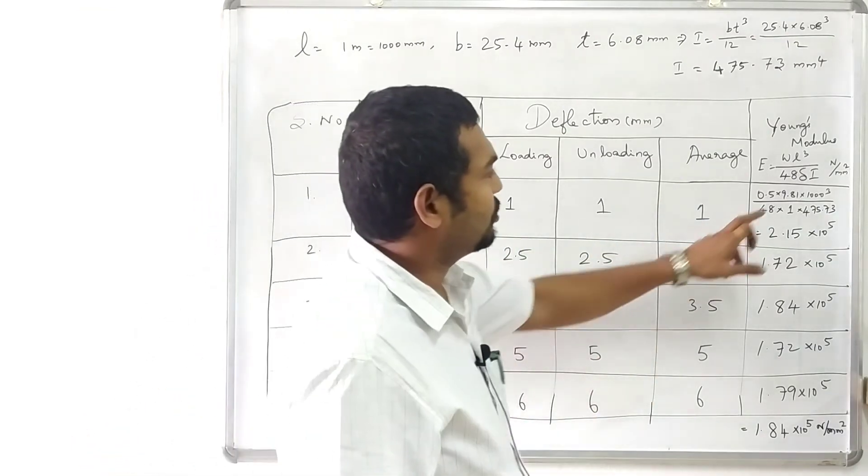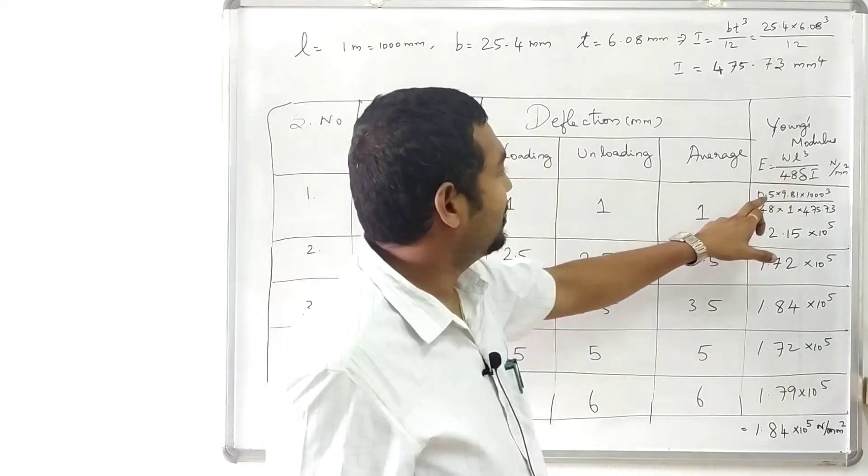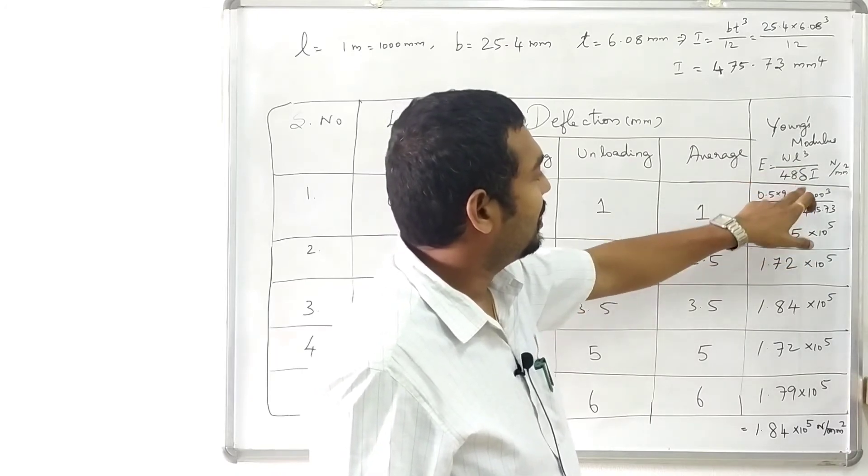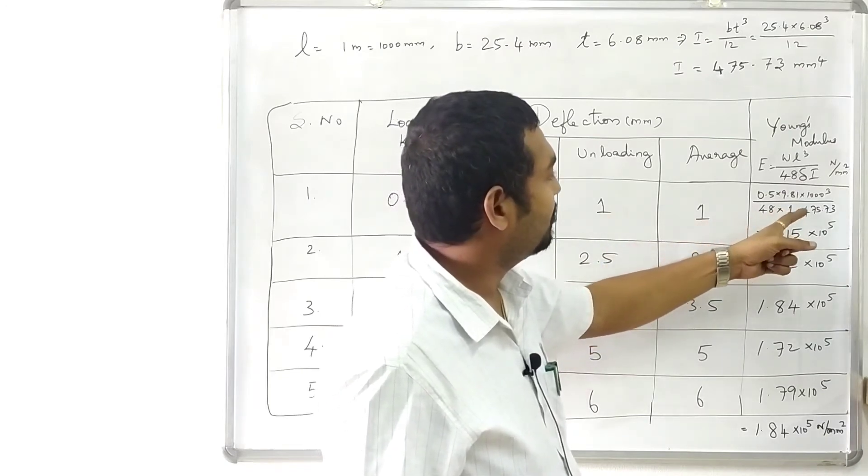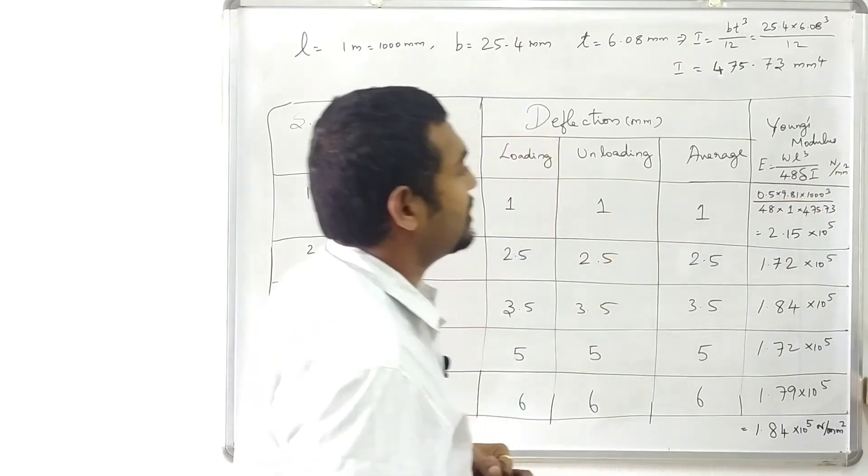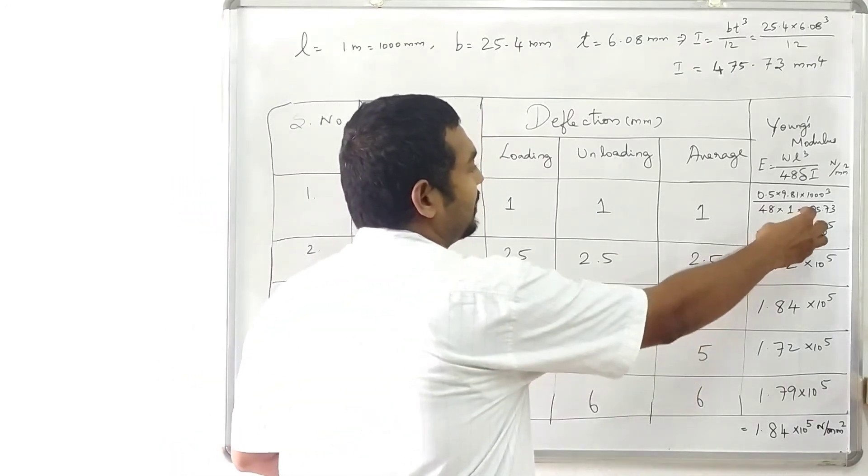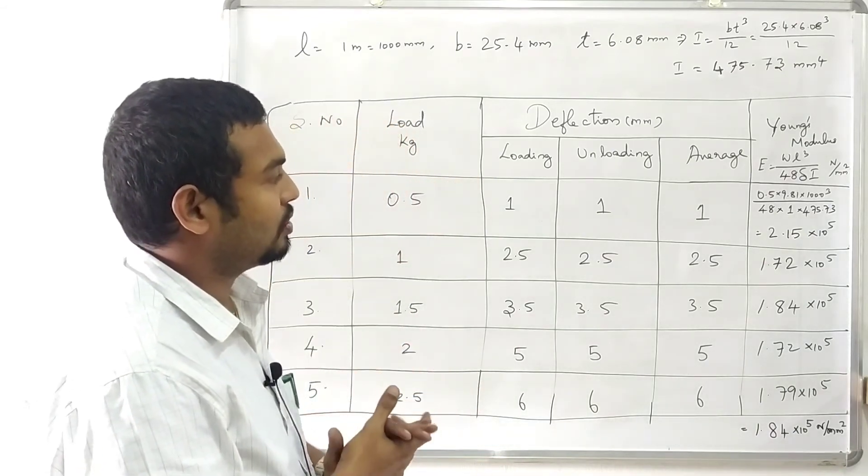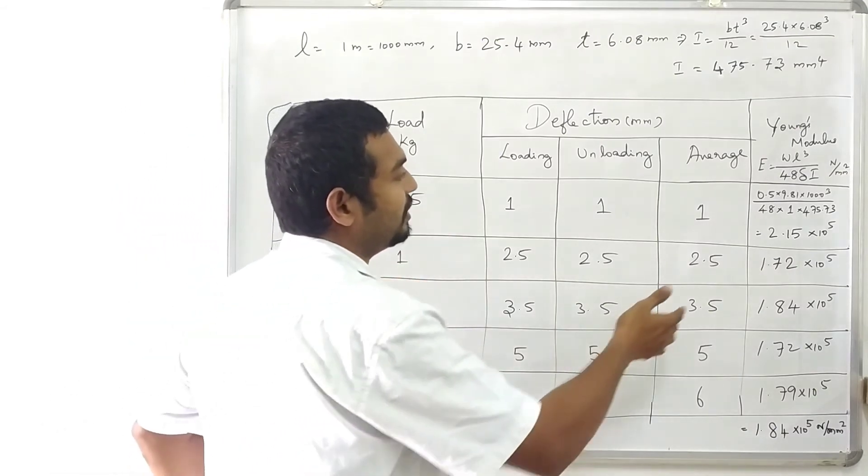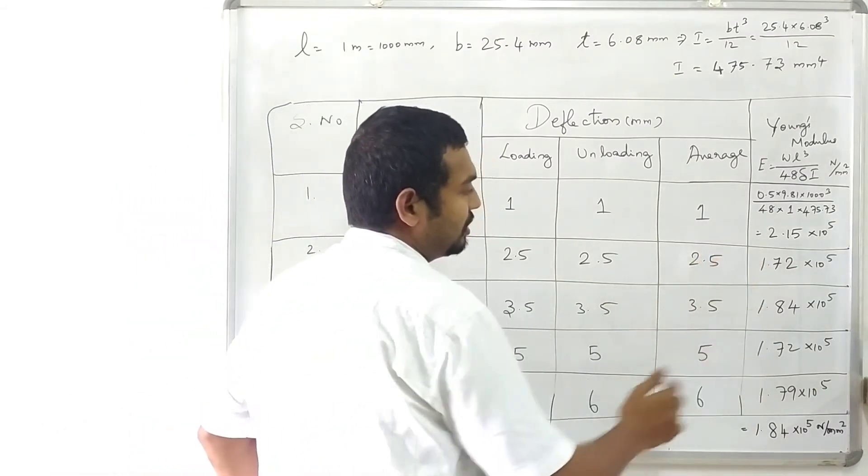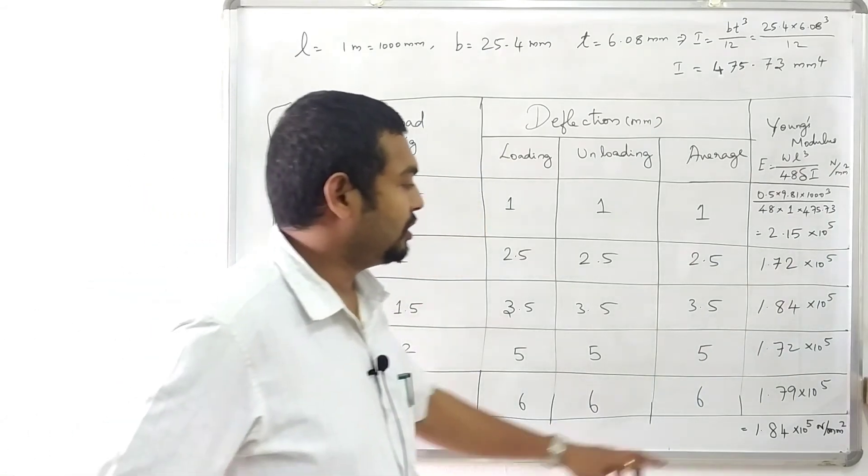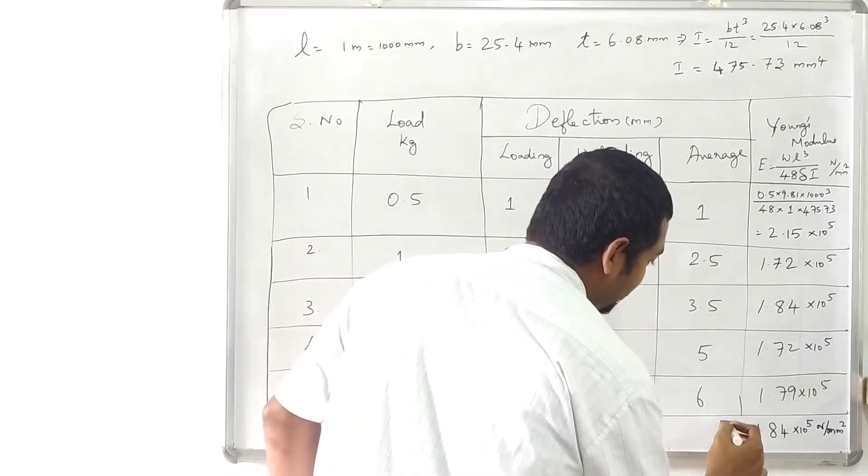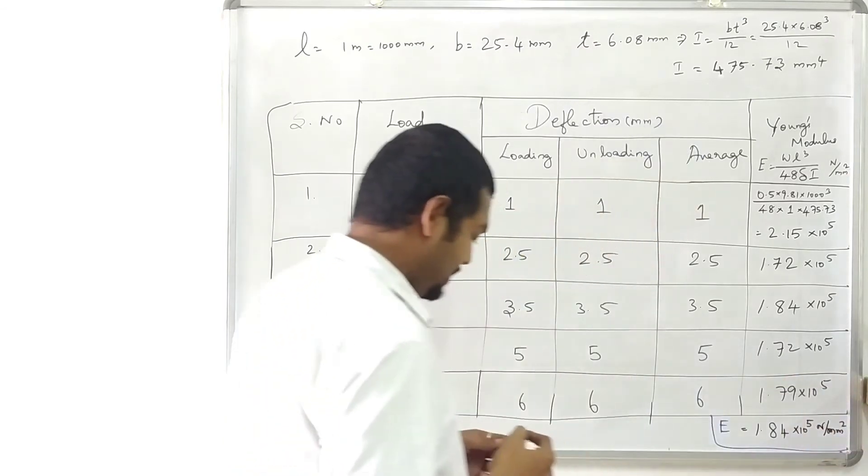Next Young's modulus, load 0.5 kg, newton convert. Next length 1000 mm divided by 48, delta 1 mm average will be 1 mm. Next I 475.73. Substitute, Young's modulus 2.15 into 10 power 5 newton per mm square. The load increase, Young's modulus varies. The average value is 1.84 into 10 power 5 newton per mm square. This is the Young's modulus of given steel beam.